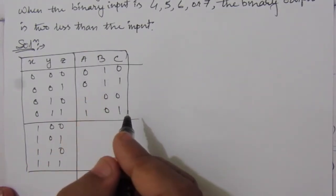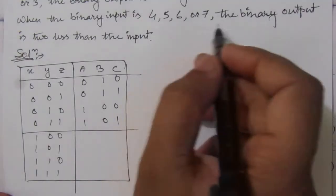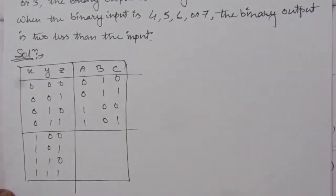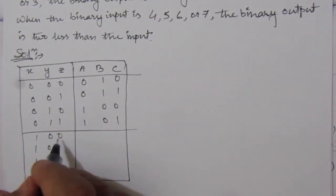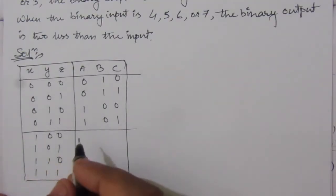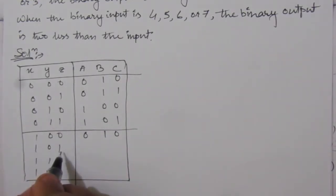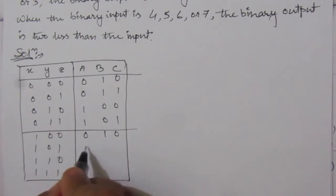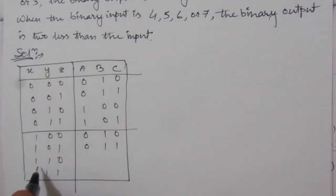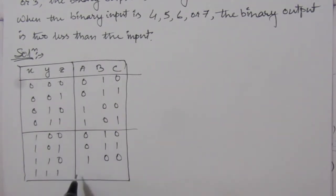For the second condition, when the binary input is 4, 5, 6, or 7, the binary output is 2 less than the input. Input 4 (100) minus 2 gives 2, so output is 010. Input 5 (101) minus 2 is 3, so output is 011. Input 6 (110) minus 2 is 4, so output is 100. And input 7 (111) minus 2 is 5, so output is 101.